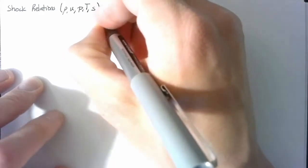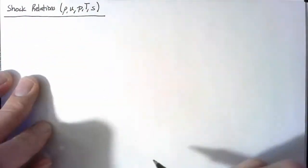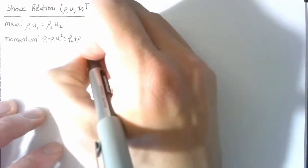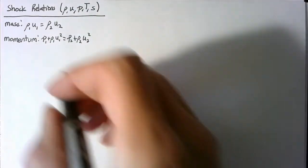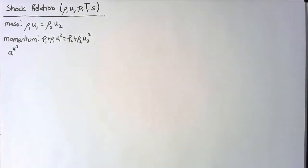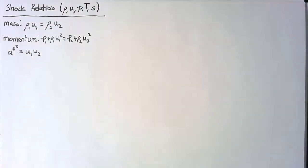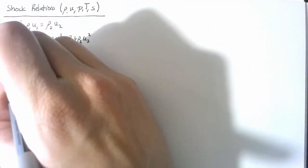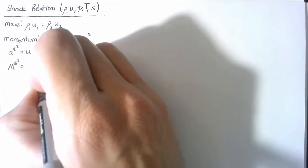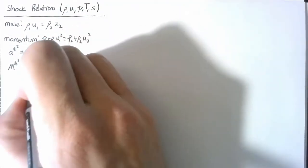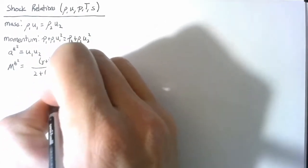Specifically, we're going to be looking at density, velocity, pressure, temperature, and entropy. Our starting points are again going to be the mass and momentum equations. But now we have some new tools. We're going to be using the definition of a* squared — the critical speed of sound — which we found was equal to u₁ times u₂. Additionally, we're going to be using our equation for M* squared, which was equal to (γ + 1) times the current Mach number squared divided by 2 plus (γ − 1) times the current Mach number squared.